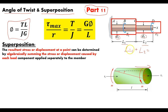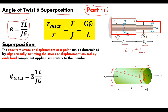The deformation of length one and length two combine to give us our total deformation - that is the definition of superposition. This is why we alter the equation to say the total angle of twist is equal to the sum of the individual components, based on the particular torque, length, polar moment of inertia, and shear modulus (or modulus of rigidity).